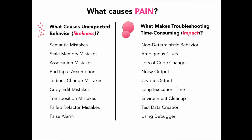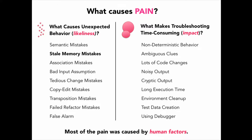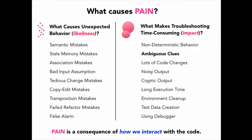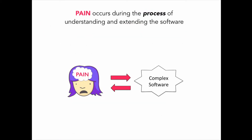What I realized as I was doing this is most of the pain was actually caused by human factors rather than problems in the code. For example, stale memory mistakes — when I have an idea in my head about how the code is supposed to work, but it doesn't work that way anymore because somebody changed it. Or ambiguous clues — when you're running an experiment, there are multiple possibilities, you make a bad assumption, and down the rabbit hole you go troubleshooting for hours. Pain is a consequence of how we interact with the code, not really problems with the code itself. Pain occurs during the process of understanding and extending the software, so I started optimizing for what I call idea flow — the flow of ideas between the developer and the software rather than optimizing the code itself.